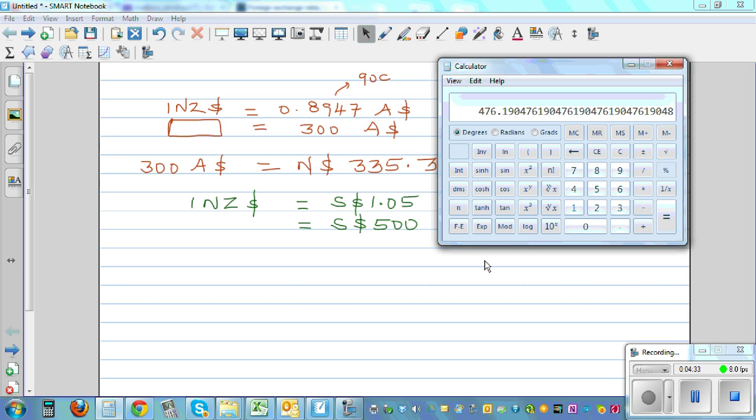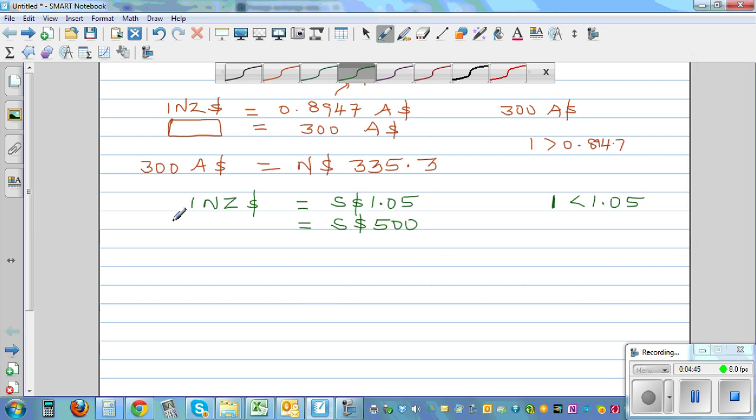So I should go 500 divided by 1.05. It is 476.2 New Zealand dollars. Or if you want to round it in 2 decimal places, it is 476.19 New Zealand dollars.